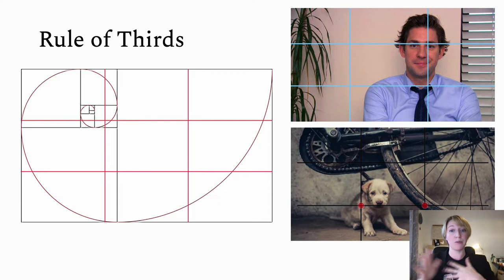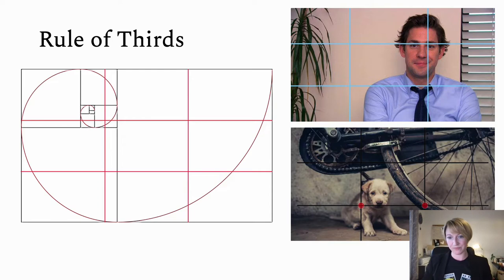You can compose your shots with your subject centered up, but then you have to put a little more effort into making sure your surroundings look nice as well. So putting someone on a third is just a quick and easy shortcut to use while you're getting started.